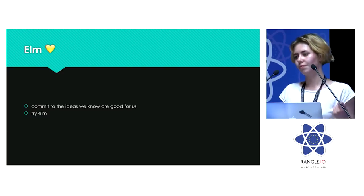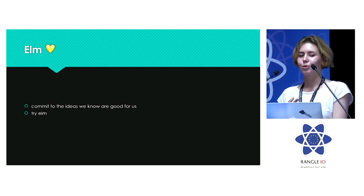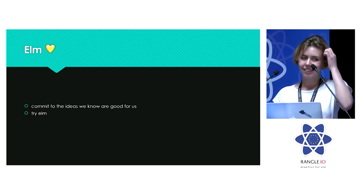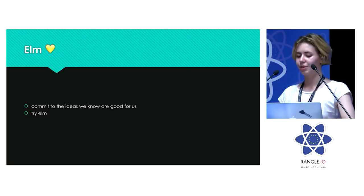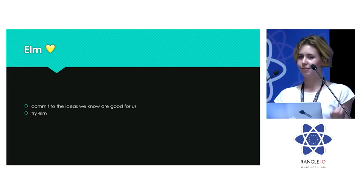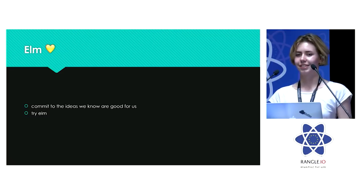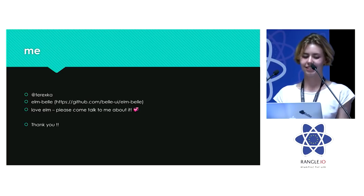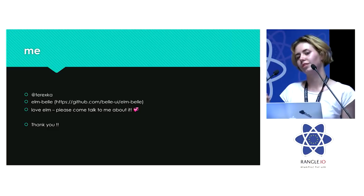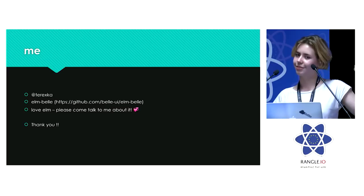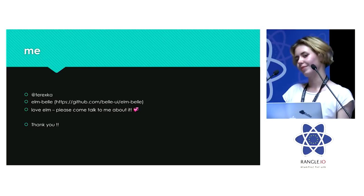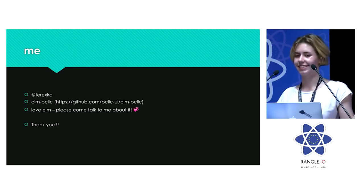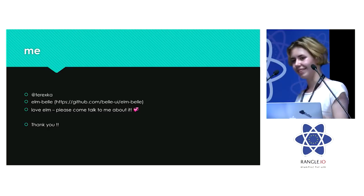It gives you all the things you know are good for you — like Redux, ImmutableJS, and Flow types — and it gives you them with a compiler who actually tells you what is wrong, and with a syntax that is crafted to express this idea. You should try it out. My name is Jessica, and I work on an open source UI library for Elm, so you can check that out if you want and contribute. I love Elm, and if you want to talk about it or learn more, I'm by no means an expert, but I really like the idea and you should come talk to me about it. Thanks.